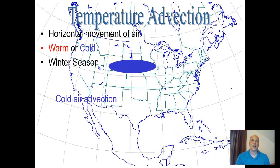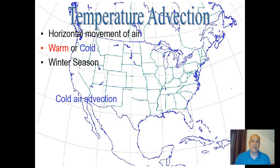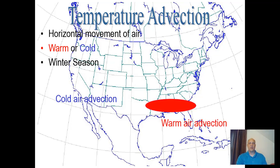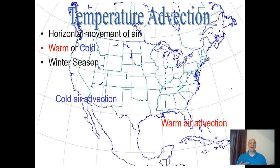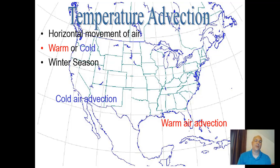Temperature advection is the horizontal movement of air masses. Colder air typically moves toward the equator, while warmer air moves toward the polar areas. This mixing creates weather fronts. Advection is another method the atmosphere uses to redistribute excess energy, and it happens a lot in the winter season with major storm systems.